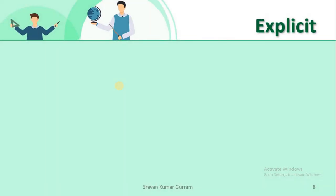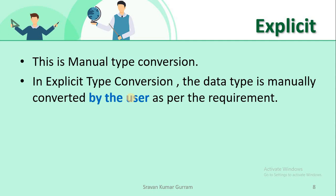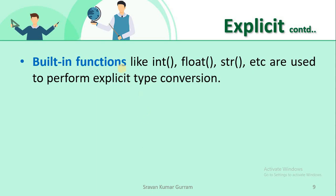The second category is explicit type conversion, which is manual type conversion. As a programmer, we need to write some extra code to implement it. As per our requirement, the user has to convert a particular value or expression into a specific type. With explicit type conversion, there is a risk of data loss since we are forcing an expression to convert from one type to another. To implement explicit type conversion, we use built-in functions provided by Python like int, float, str, etc. The int function converts any expression into integer data type, float converts to float, and str converts to string.